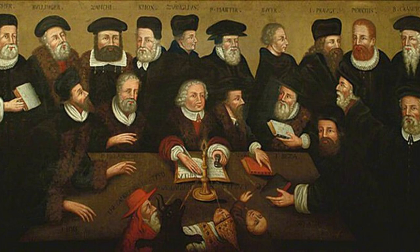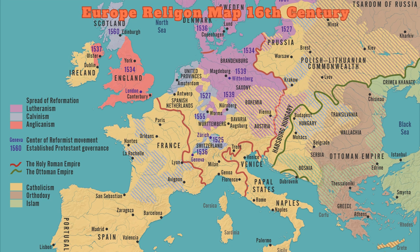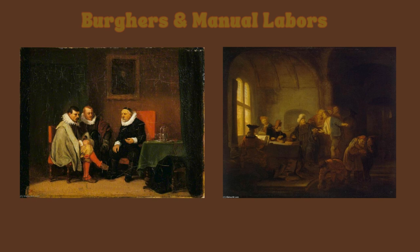Religion also played a significant role in the fight. The Dutch were dissatisfied with the Church of Rome and adopted various religions, including Lutheranism, Anabaptism, and Calvinism. The Dutch provinces primarily became Calvinist in the 16th century, while the Habsburg dynasty of Spain was Catholic and sought to suppress Protestantism and enforce Catholic orthodoxy with harsh measures, including the dreaded Inquisition.